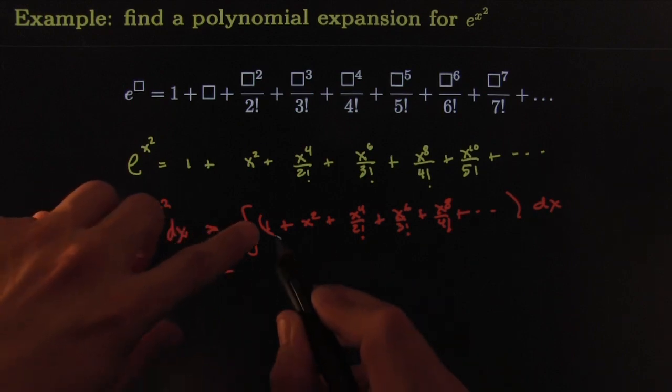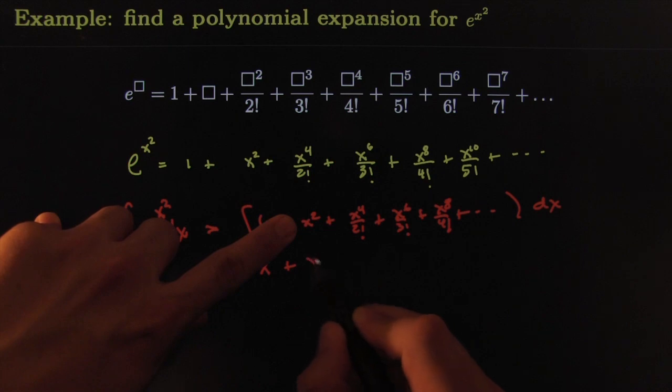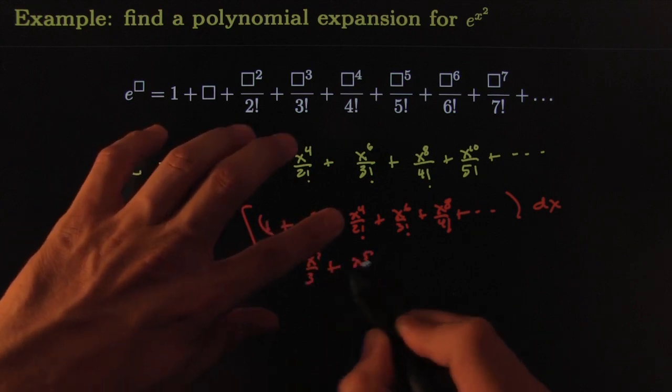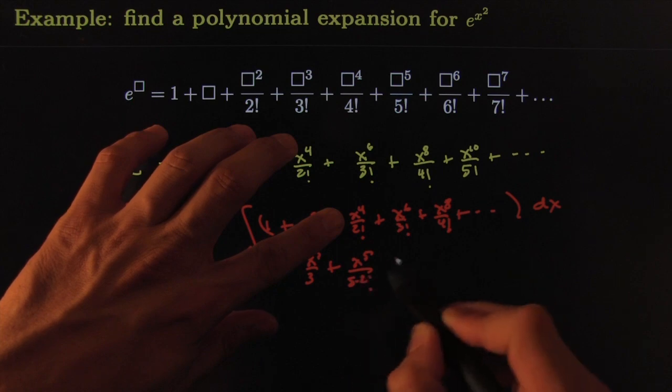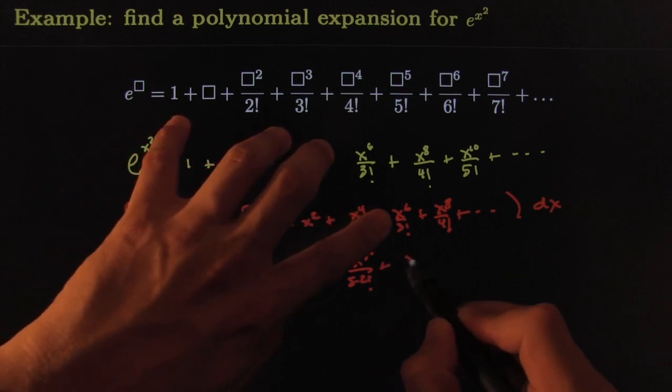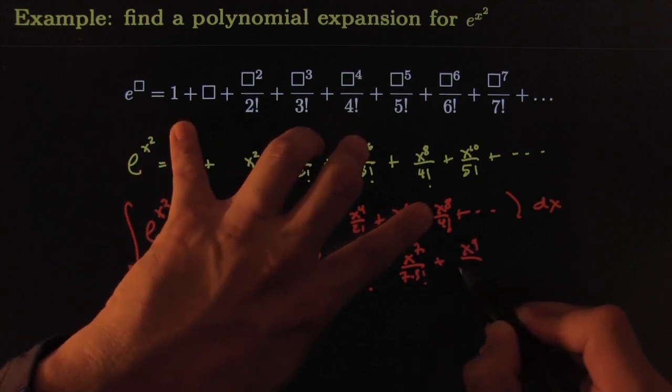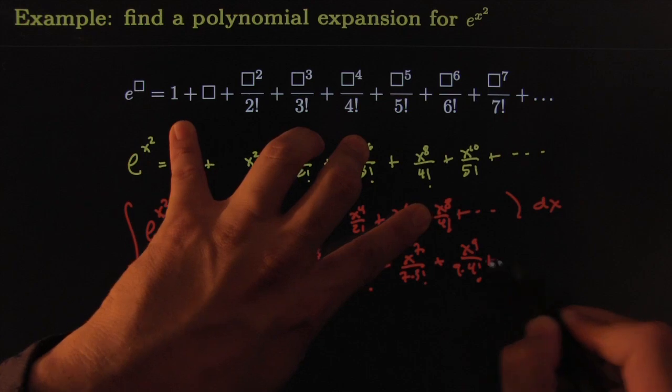Well, let's see. Integral of 1 is x. The integral of x square would be x to the 3rd. The integral of that would be x to the 5 over 5 times 2 factorial. The integral of that would be x to the 7th over 7 times 3 factorial. The integral of that would be x to the 9th over 9 times 4 factorial and so on and so forth.